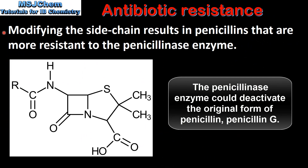Modifying the side chain results in penicillins that are more resistant to the penicillinase enzyme. The penicillinase enzyme is an enzyme that could deactivate the original form of penicillin, which was penicillin G.